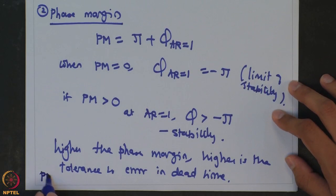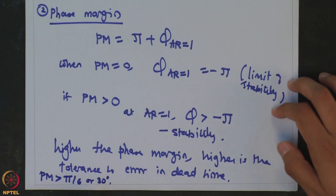Gain margin and phase margin, being dependent on amplitude ratio and phase calculations, are also functions of the controller parameters. So by specifying a particular gain margin and phase margin, we get equations based on the controller parameters Kc, tau_i, and tau_d. We can accordingly select the controller parameter values to ensure a certain minimum gain margin and minimum phase margin. Typically, a phase margin greater than pi/6 or 30 degrees is quite common.